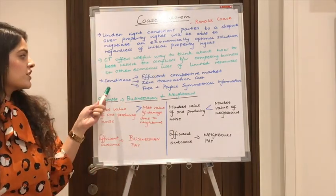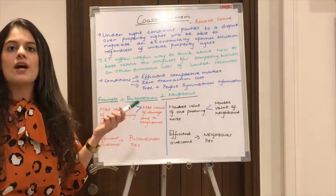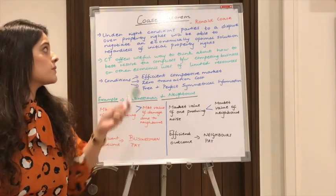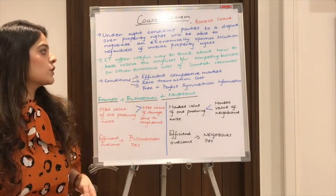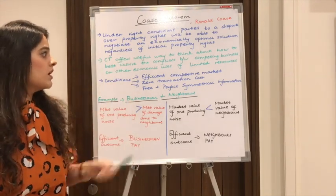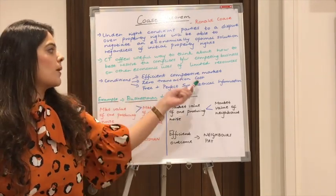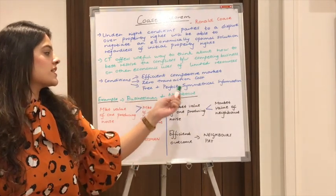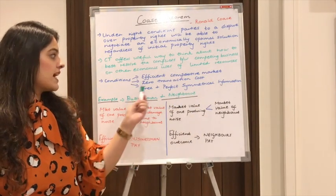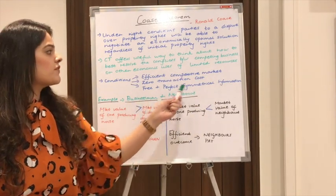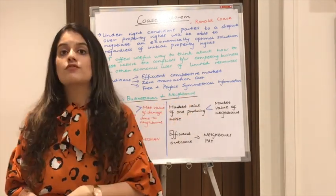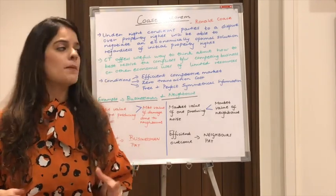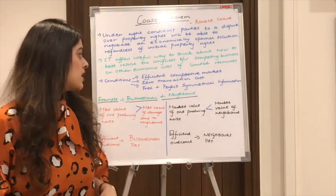The three assumptions which have to be kept in mind while studying Coase theorem are: an efficient competitive market, zero transaction costs, and free and perfectly symmetrical information — meaning everyone is aware of what is happening in the markets.